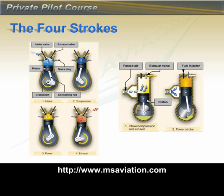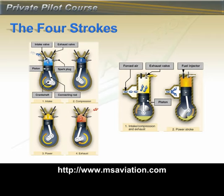Moving to the second stroke, both valves close and the piston begins moving up, compressing the fuel and air into a smaller space. In the third stroke — the power stroke — as the piston reaches the top and starts down again, the spark plugs ignite the fuel and air mixture, pushing the piston down. In the fourth stroke, the piston comes back up and the exhaust valve opens, allowing the burned gases to escape. This whole process is repeated until ignition is stopped or fuel and air are cut off.